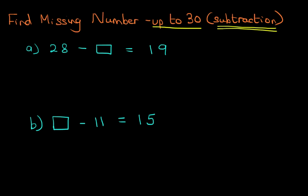Now, if we have a look at example one, we've got 28 minus something equals 19. So therefore, we have to find the missing number which we have to subtract from 28 to equal 19. Alternatively, we have to find the number which we can add to 19 to make it equal to 28.